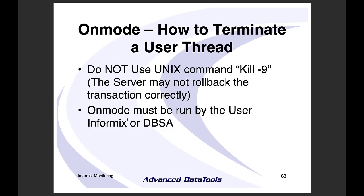To terminate a user session, do NOT use 'kill -9' at the Unix level. Kill -9 kills the process without giving Informix a chance to clean up and roll back the transaction — it's probably the number one cause of corrupt indexes. If you see lots of corrupt indexes, check whether a sysadmin is running kill -9. Always use Onmode to terminate a user.